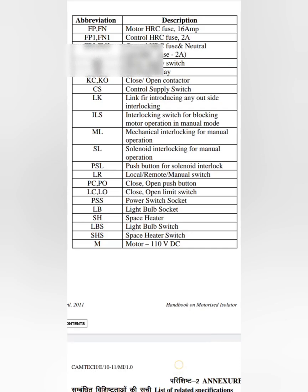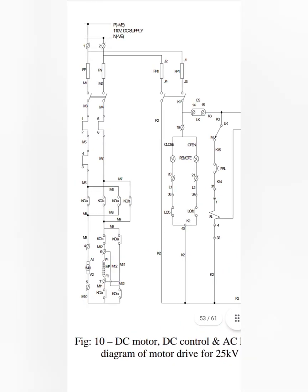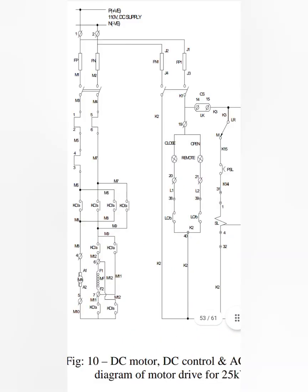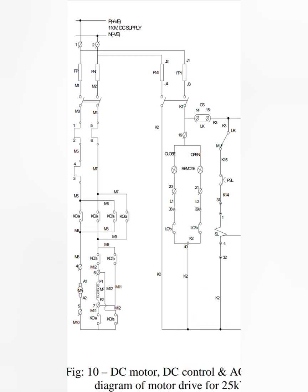Coming up to the operations, first we will see this motor operation — how the motor gets operated. Here we have a key system for your controlling of the motor. The circuit in state 1 and state 2 enable means automatically this supply will go inside your motor supply. We have M6 and M5 contacts and further it will move to your KC.